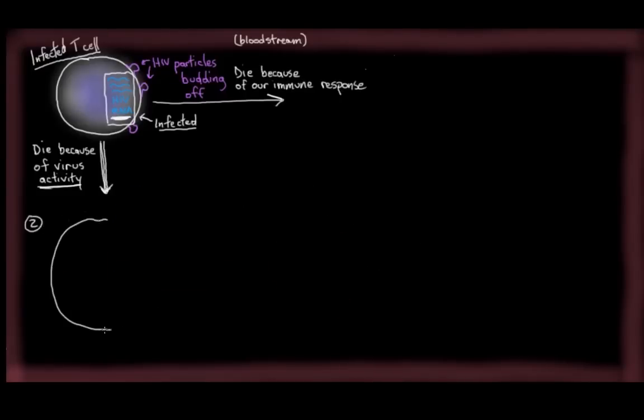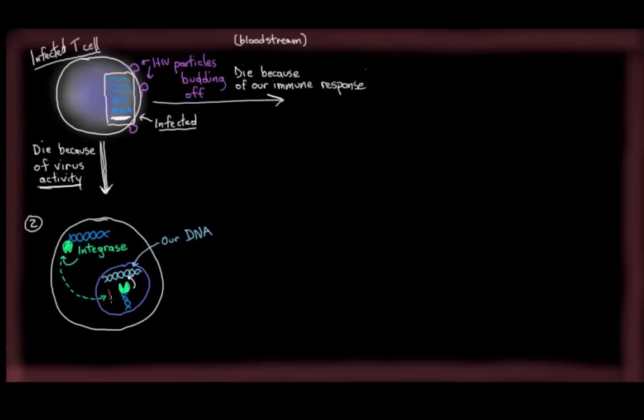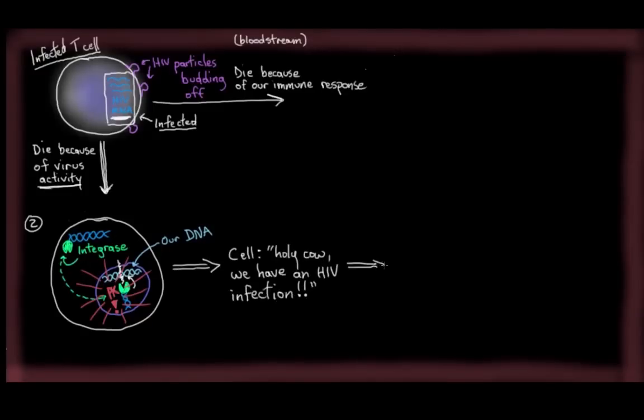And the second way an infected T cell might die off - do you remember integrase? That's the HIV enzyme that will grab onto this viral DNA here, drag it into the nucleus, and then try to integrate it into our DNA. Well, sometimes, while integrase is getting its integration on, our cell sort of catches on to what's happening. And our cell catches on because we have another cellular sensor called DNAPK that senses when there's a break in our DNA. So, at this point, our sensor's triggered, and then our cell is like, holy cow, we have an HIV infection.